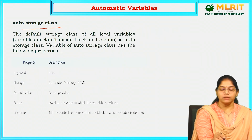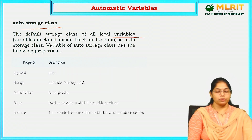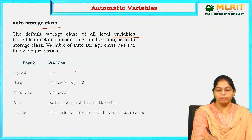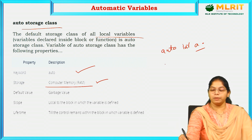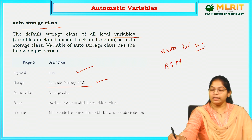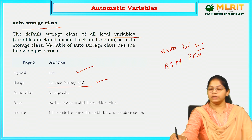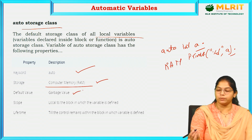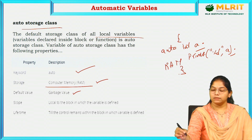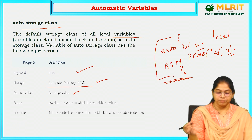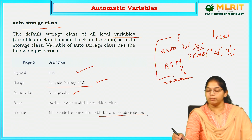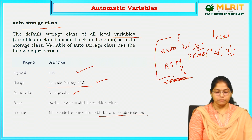Auto storage class summary: the default storage class of all local variables is auto. The keyword is auto, storage is RAM memory. If I declare a variable and do not initialize any value but try to print it, it prints a garbage value. The variable a is local to that block, and the lifetime is till the control remains within the block where the variable is defined.